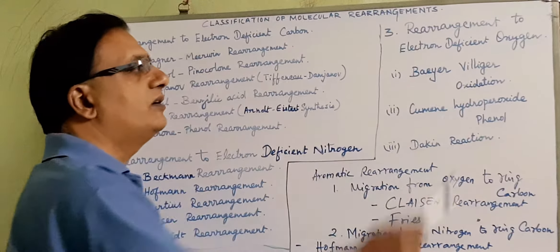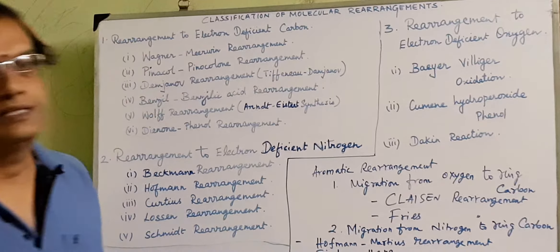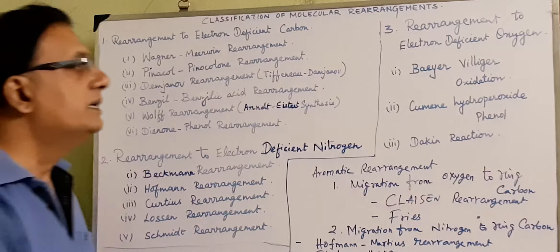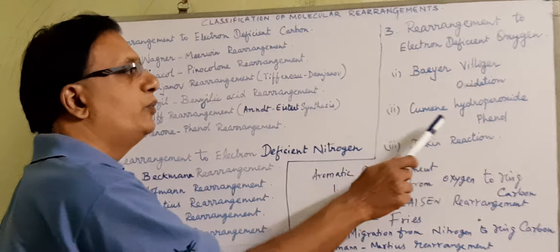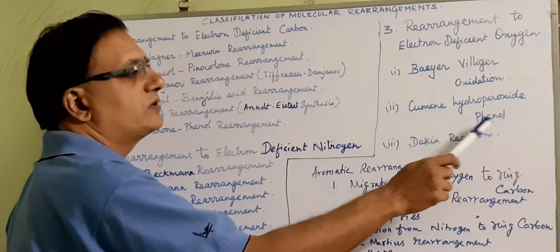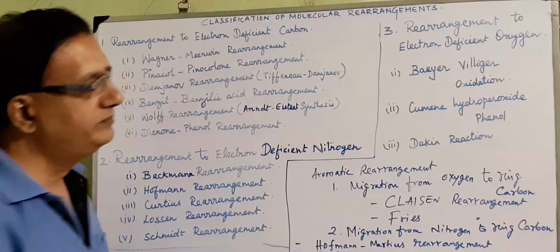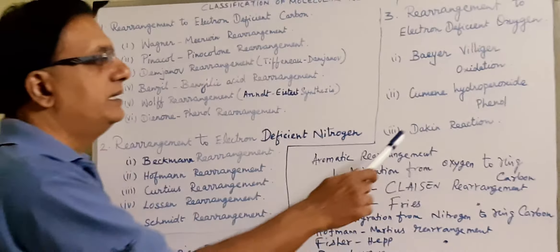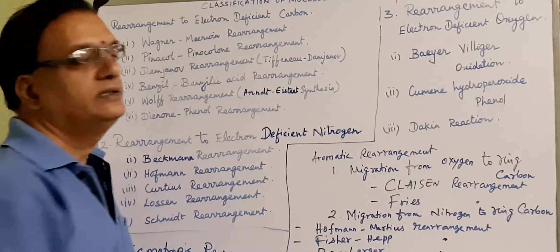Rearrangement to the electron-deficient oxygen: in most cases Baeyer-Villiger oxidation is given in the syllabus, and also Cumene hydroperoxide-phenol and Dakin rearrangement.